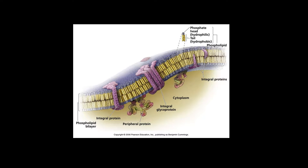This TinyTeach is about cell membranes, specifically about selective permeability of cell membranes. Selective permeability basically means that some molecules can easily cross the cell membrane and other molecules are blocked from being able to cross the cell membrane. The reason that this happens is really all about the phospholipids that make up the bulk of the cell membrane.